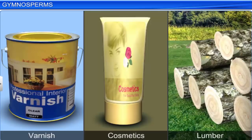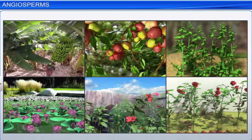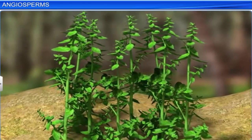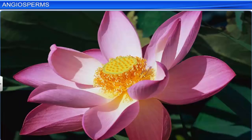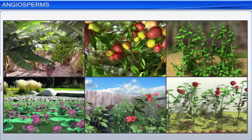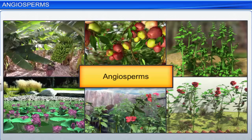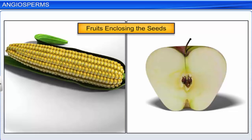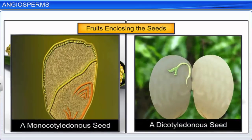Today, gymnosperms are widely used to make products such as varnish and cosmetics. They also provide us with lumber that's used to make furniture. You must have come across banana plantations, apple orchards, or herbs such as basil. You may have also seen flowers such as lotus and roses growing in ponds and gardens. All these are species of flowering plants, also called angiosperms — plants in which the ovules develop inside the flowers. The seeds too are enclosed in fruits, and they can be monocotyledonous or dicotyledonous.